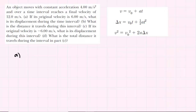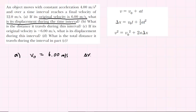In part A of this question, we are told that the object's original velocity is 6 meters per second. So we can say v-naught is equal to positive 6 meters per second, and we are asked to calculate its displacement during the time interval. We know that it has a constant acceleration of 4 meters per second squared, and the final velocity is 12 meters per second.